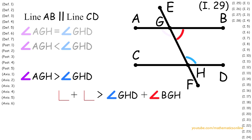Since the two interior angles on the same side are less than two right angles, Postulate 5 says that line AB and line CD must intersect at a point, which implies that line AB and line CD are not parallel. But we are given that line AB and line CD are parallel. We cannot have both statements true at the same time, so we have a contradiction. This contradiction arose because we assumed that angle AGH is greater than angle GHD, so this statement must be false.